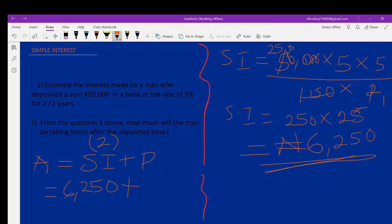So 50,000 plus 6,250 becomes 56,250 naira. This is the amount.